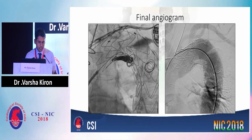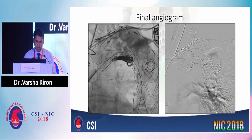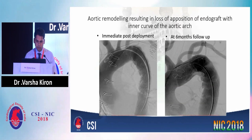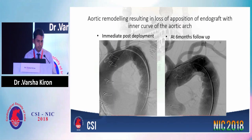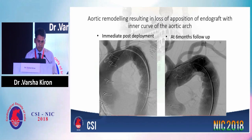Coming back to why this happened — why was it not there to begin with, and why did it happen 6 months down the line? On reviewing the images, we found there was extensive aortic remodeling, which resulted in loss of apposition of the endograft within the curve of the aortic arch. This panel shows the picture immediately post-deployment, where there is good apposition of endograft to the aorta. The picture done 6 months later shows a loss of apposition to the aortic wall at the inner curve of the endograft.